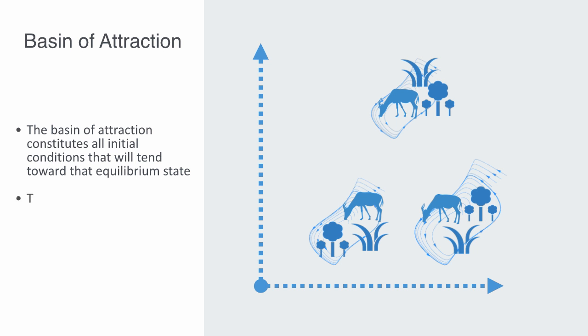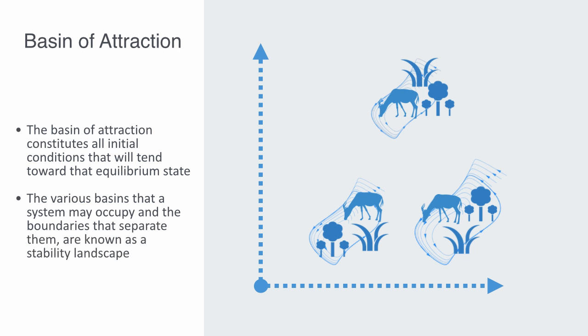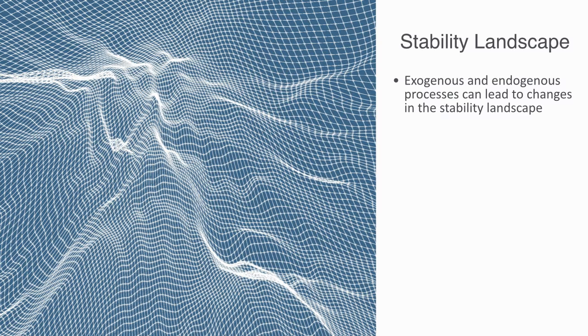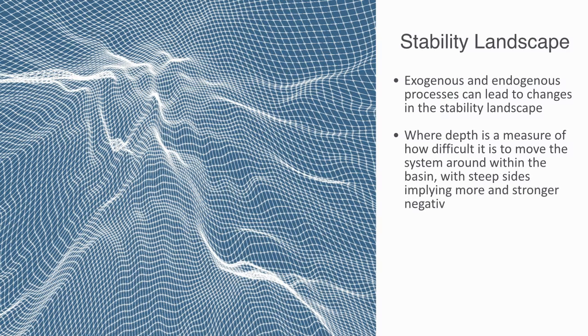The various basins that a system may occupy and the boundaries that separate them are known as the stability landscape. Both exogenous drivers such as rainfall or sunlight availability, and endogenous processes such as plant succession or predator-prey cycles, can lead to changes in the stability landscape, such as changes in the number of basins of attraction, changes in the position of the basins within the landscape, changes of the thresholds between basins, or changes in the depths of basins, where depth is a measurement of how difficult it is to move the system around within the basin.